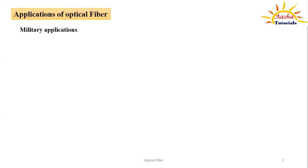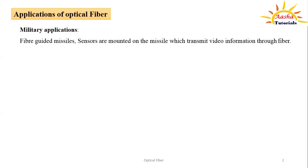The first application is military. In war, optical fiber guided missiles are used. Optical fiber based sensors are mounted on the missile to transmit video information to ground stations. If conventional communication systems are replaced with optical fiber, performance increases many folds and weight decreases significantly. For example, a shipboard radar requires seven tons of copper cable, but if replaced with optical fiber its weight comes down to just 20 kg.